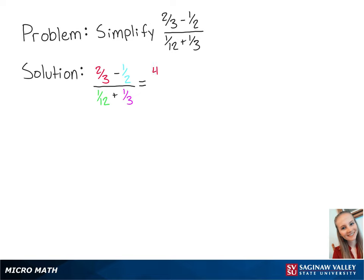2 thirds is equal to 4 sixths, and 1 half is equal to 3 sixths. To add the fractions in the denominator, we can use 12 as the common denominator. 1 twelfth is going to stay the same, and 1 third is equal to 4 twelfths.